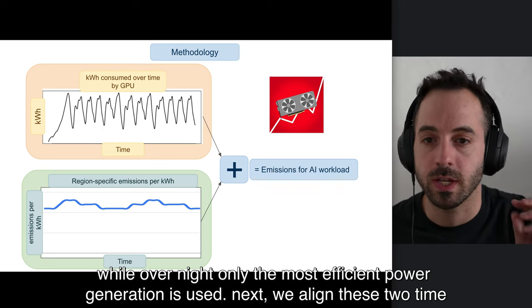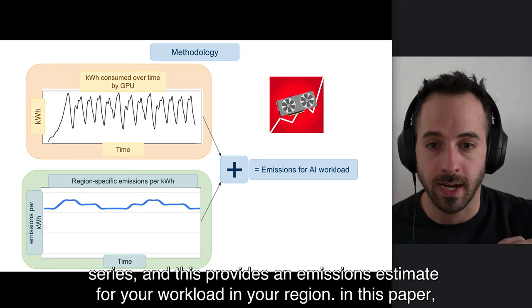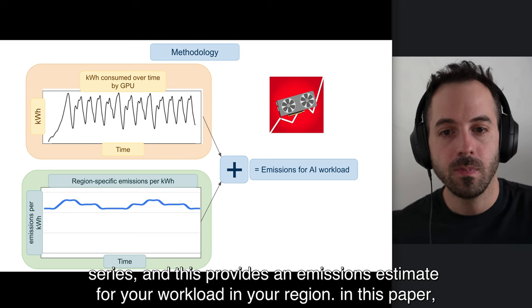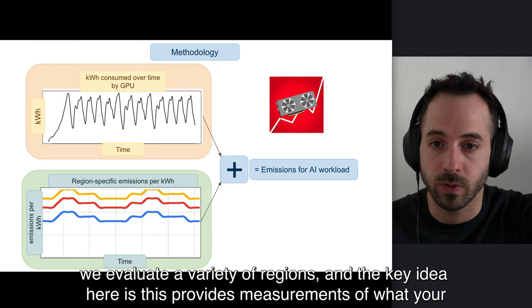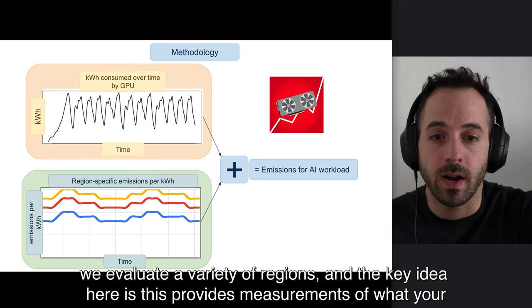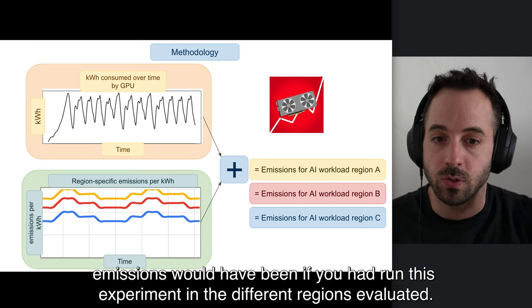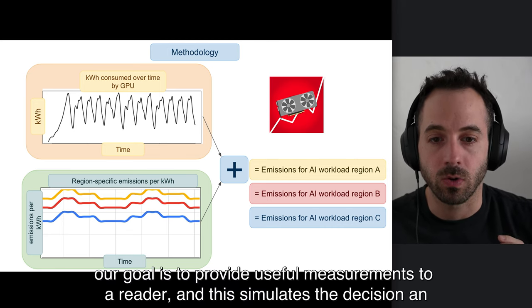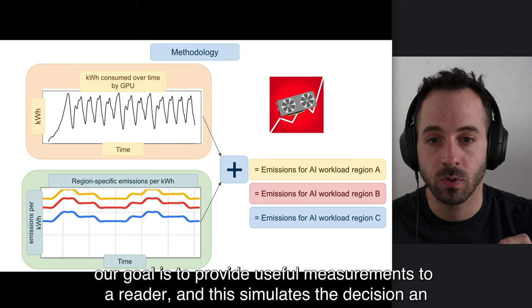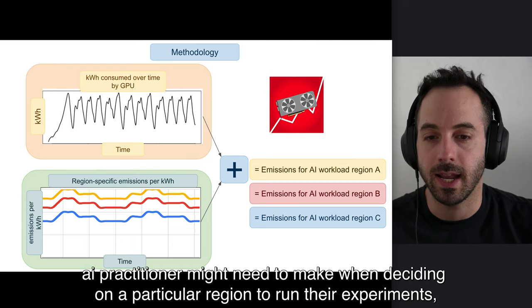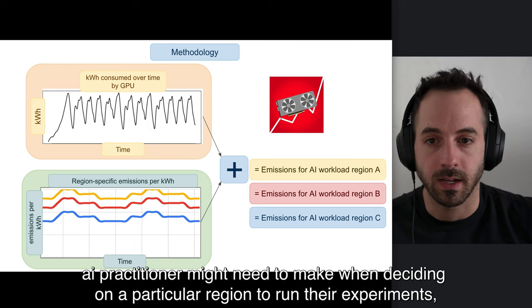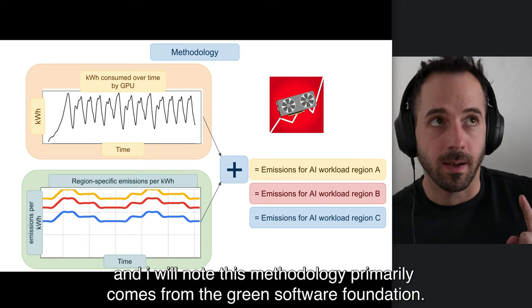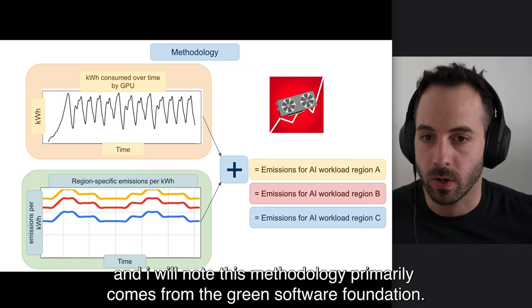Next, we align these two time series, and this provides an emissions estimate for your workload in your region. In this paper, we evaluate a variety of regions, and the key idea here is this provides measurements of what your emissions would have been if you had run this experiment in the different regions evaluated. Our goal is to provide useful measurements to a reader, and this simulates the decision an AI practitioner might need to make when deciding on the particular region to run their experiments. And I will note, this methodology primarily comes from the Green Software Foundation.